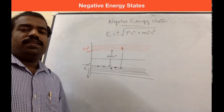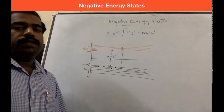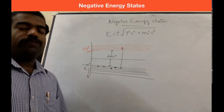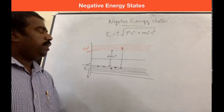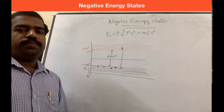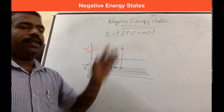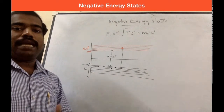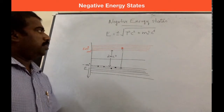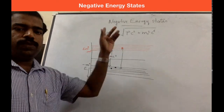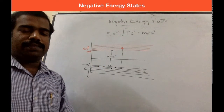Hi all. In this session we learnt the plane wave solution of Dirac's equation. In Dirac's equation there are two important implications: one is negative energy states, and the second one is Dirac's equation in a central force field. First, we can learn what negative energy states are as described in Dirac's theory.